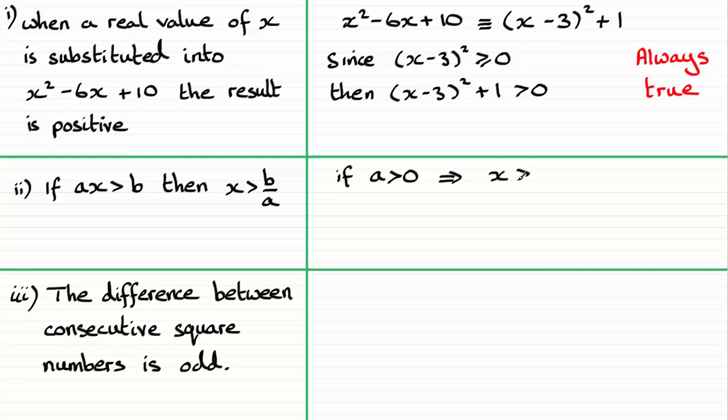But you've got to remember though that if a is a negative value, less than zero, whenever you divide by a negative value, the inequality sign reverses. So x would be less than b over a. So is this statement always true? Well no, it's only sometimes true.